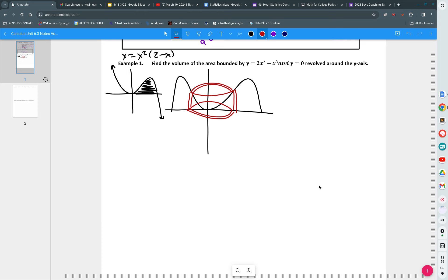I will unravel the rectangle and now I need to determine the characteristics of this rectangle. What is the width of the rectangle? It is dx. What is the height of the rectangle? 2x squared minus x cubed. Remember that the length of the rectangle is circumference, which is 2 pi times the radius. I need to determine the radius.